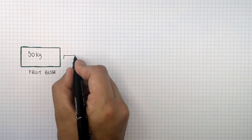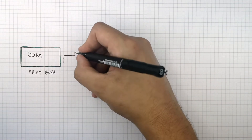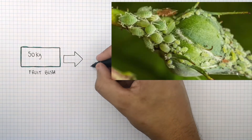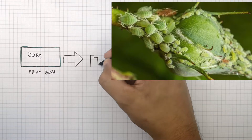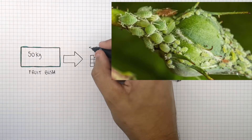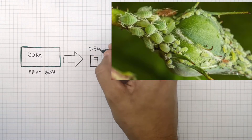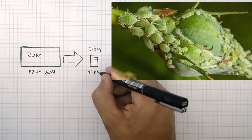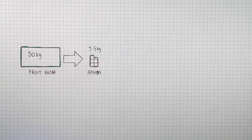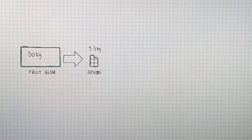50 kilograms of biomass is transferred, resulting in only 5.5 kilograms of aphids. But where does the other 45.5 kilograms of biomass get transferred to?